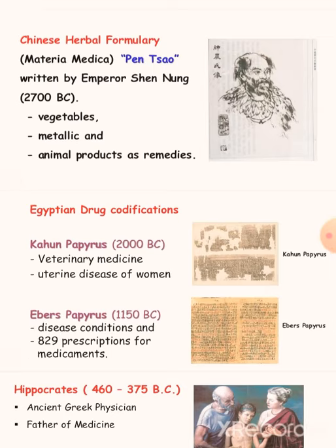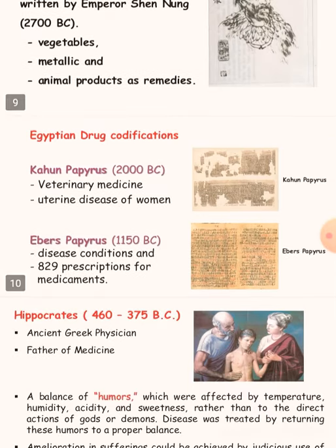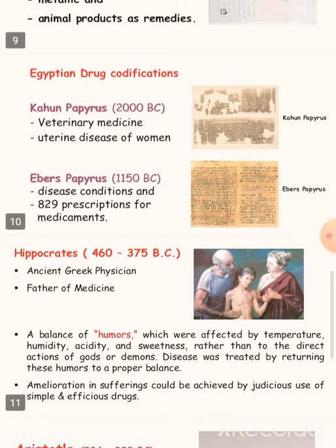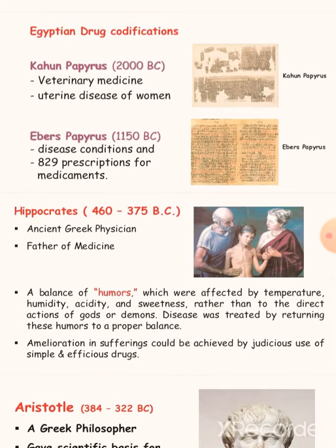Now coming to Chinese herbal formulary: the Materia Medica, called Pen Tso, was written by Emperor Shen Nung, which contains vegetables, metallics, and animal products as remedies.